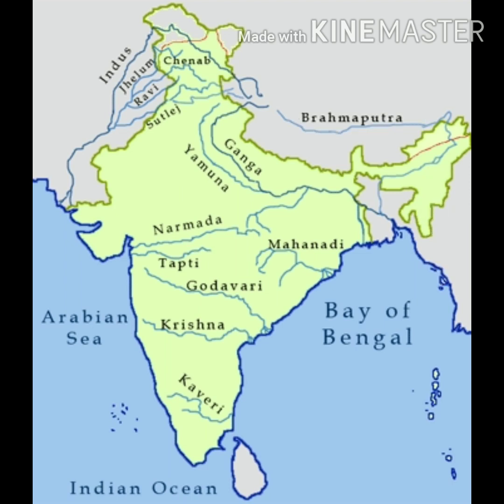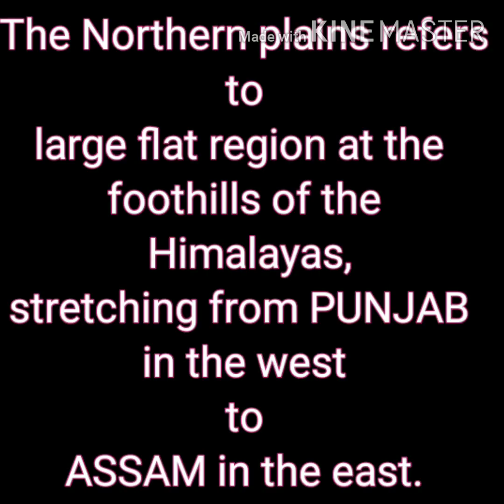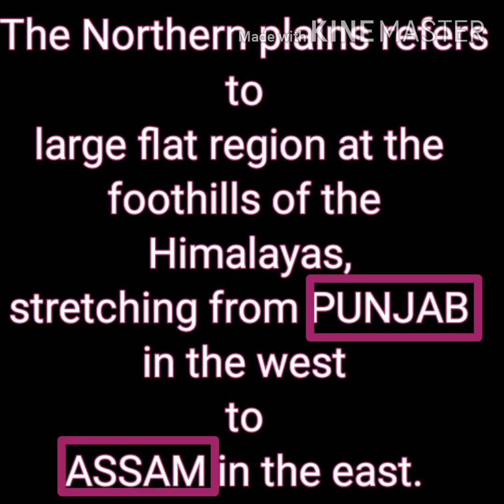These three rivers originate from the Himalayas and flow through the northern plains of India. The northern plains refers to the large flat region at the foothills of the Himalayas, stretching from Punjab in the west to Assam in the east.